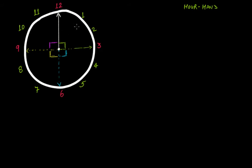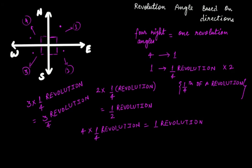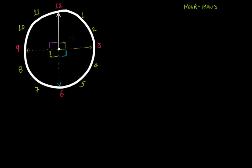So if it goes from 12 to 3, this will be one fourth of a revolution. Some students get confused while finding what's a revolution and what's an angle in the case of a clock. So first watch the previous video in the playlist, and then come to watch this video lecture.